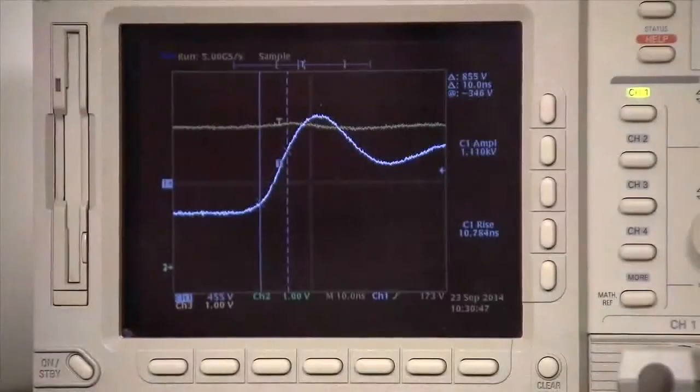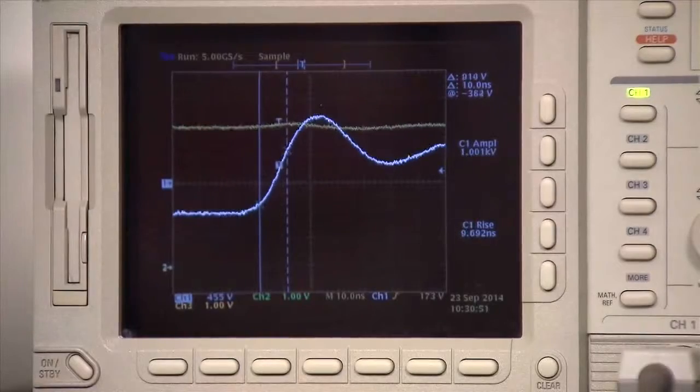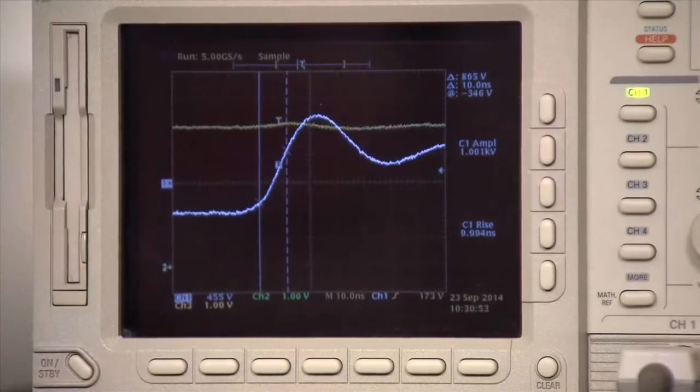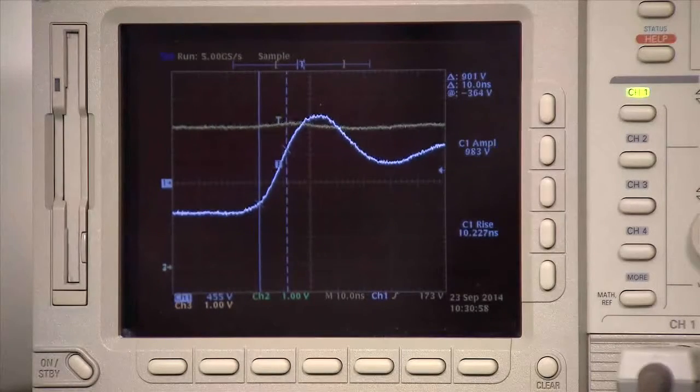Now let's look at how we measure CMTI on our ISO78XX reinforced digital isolator. The inputs of the isolator are tied to logic high, and a transient pulse is applied across the isolated ground planes of the test board.